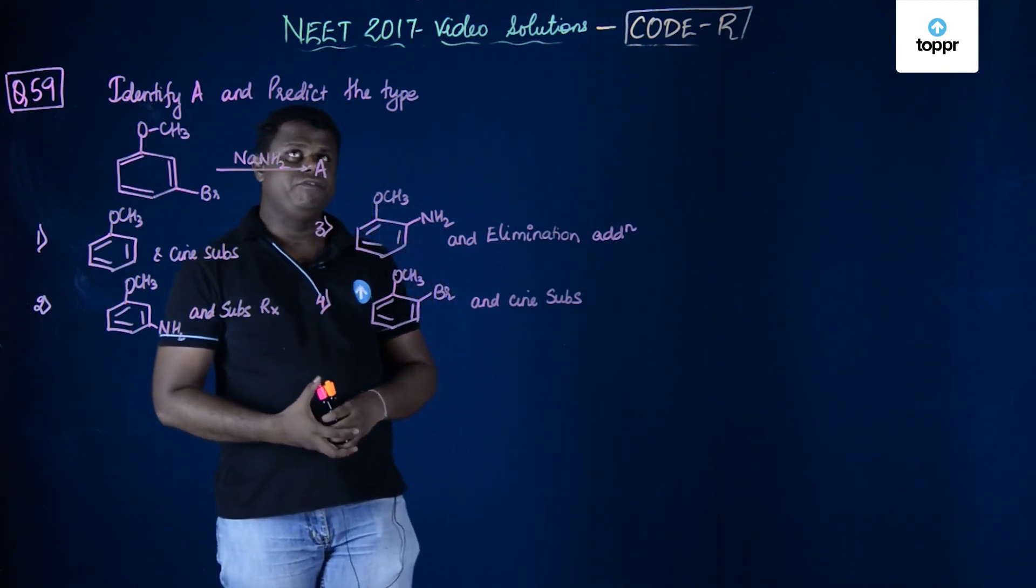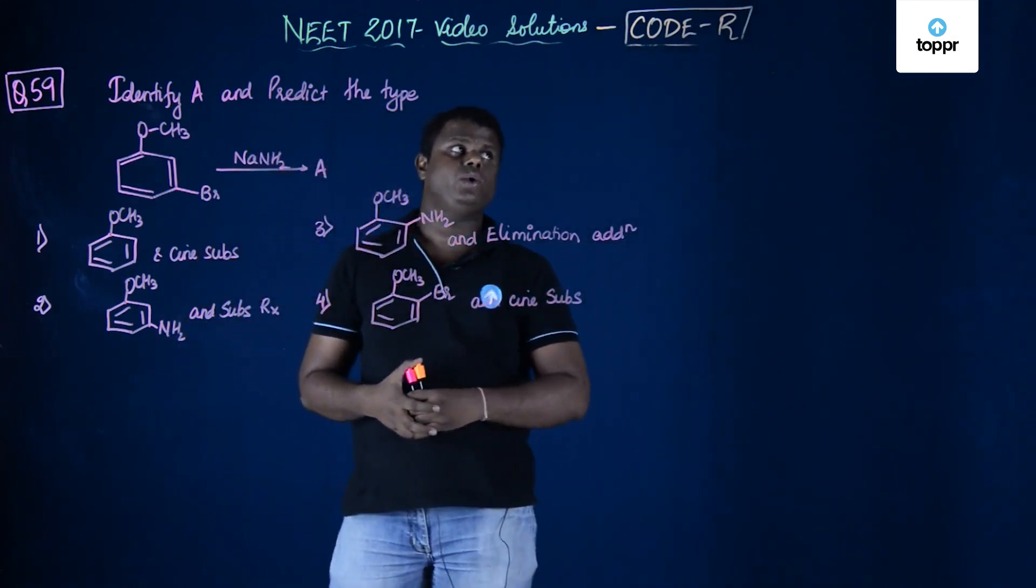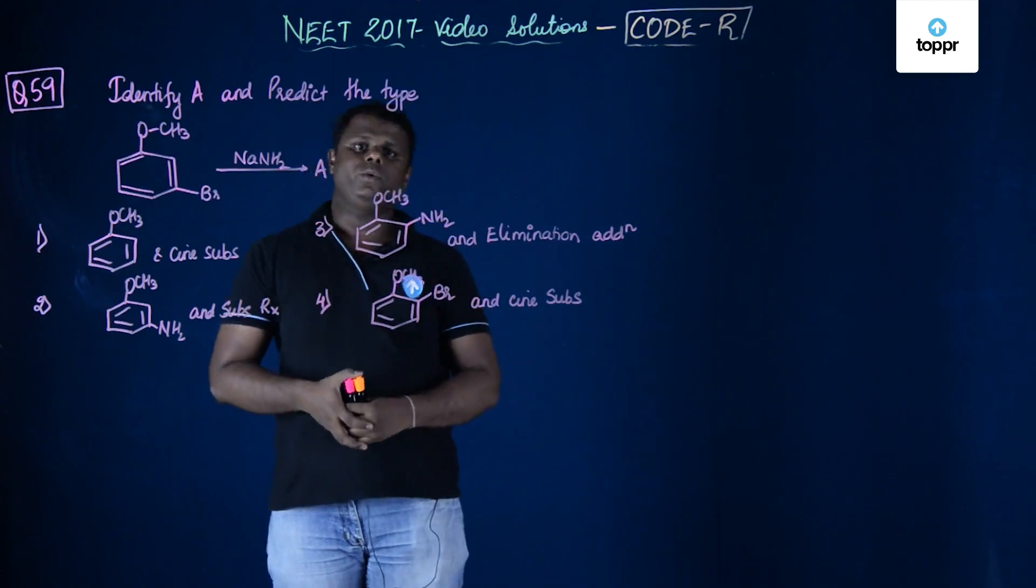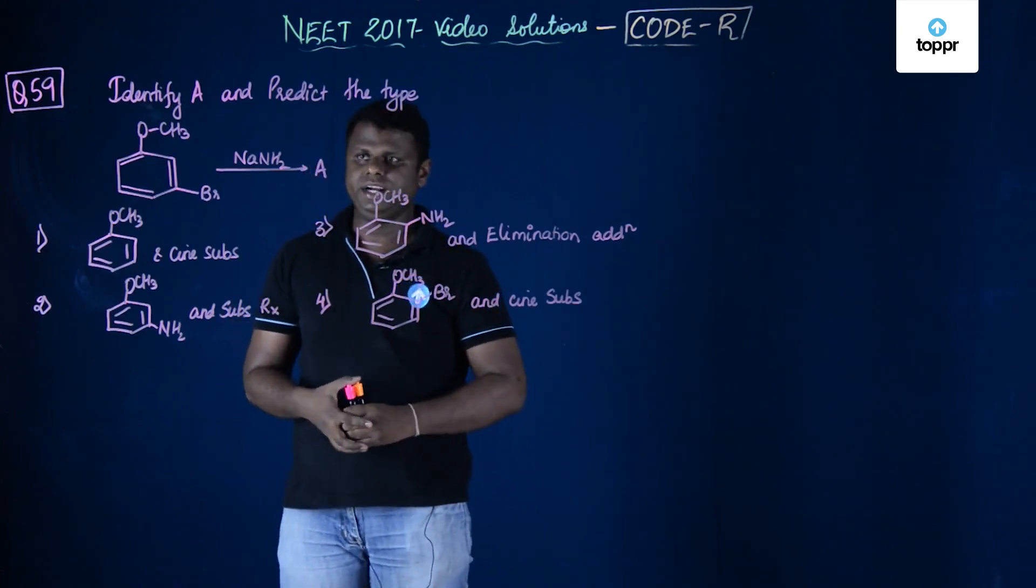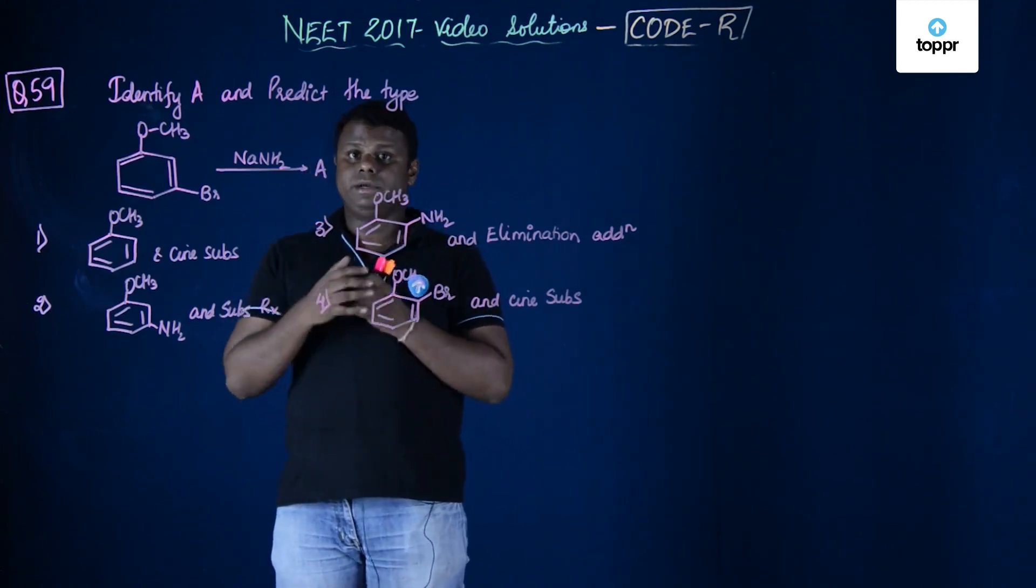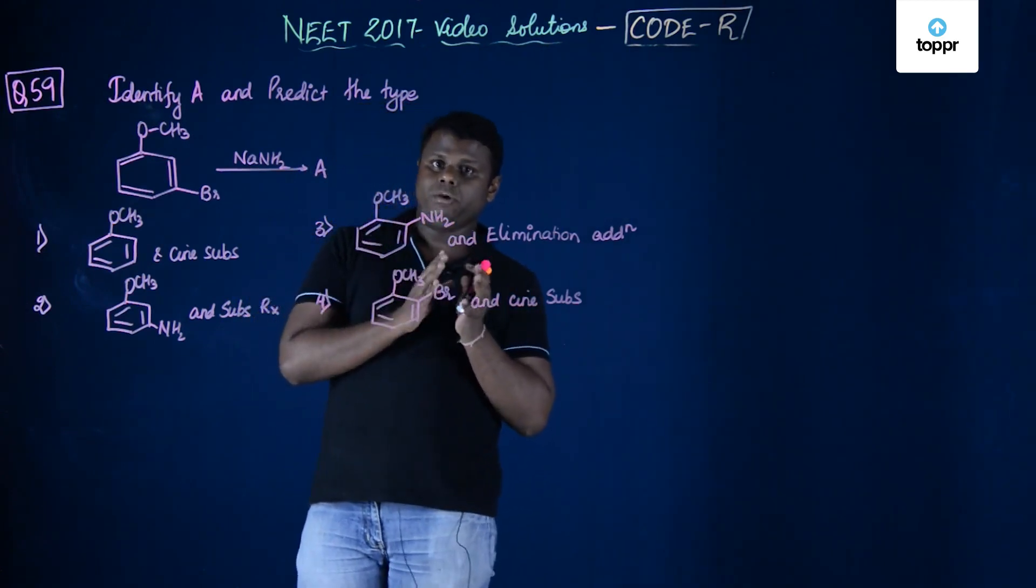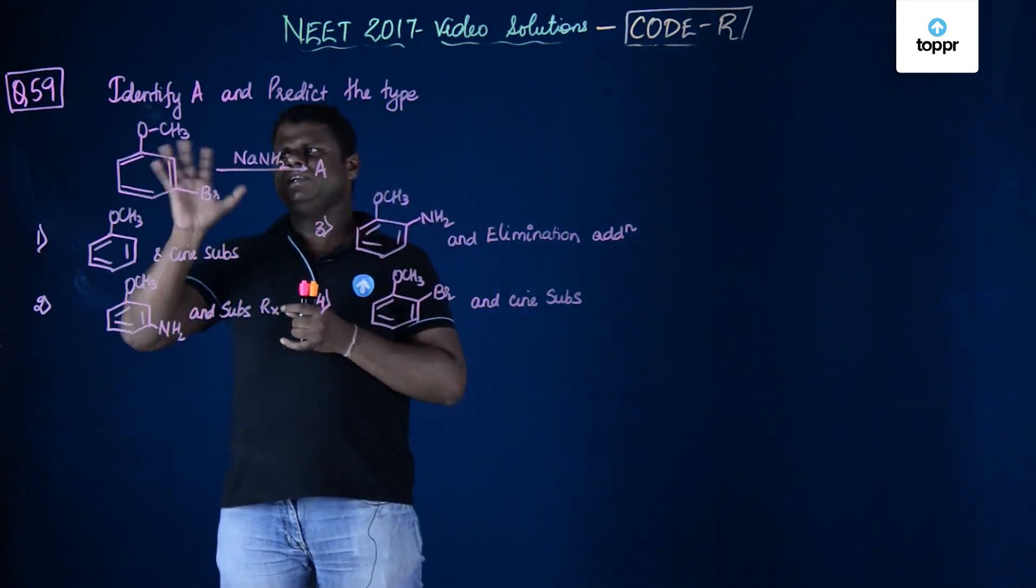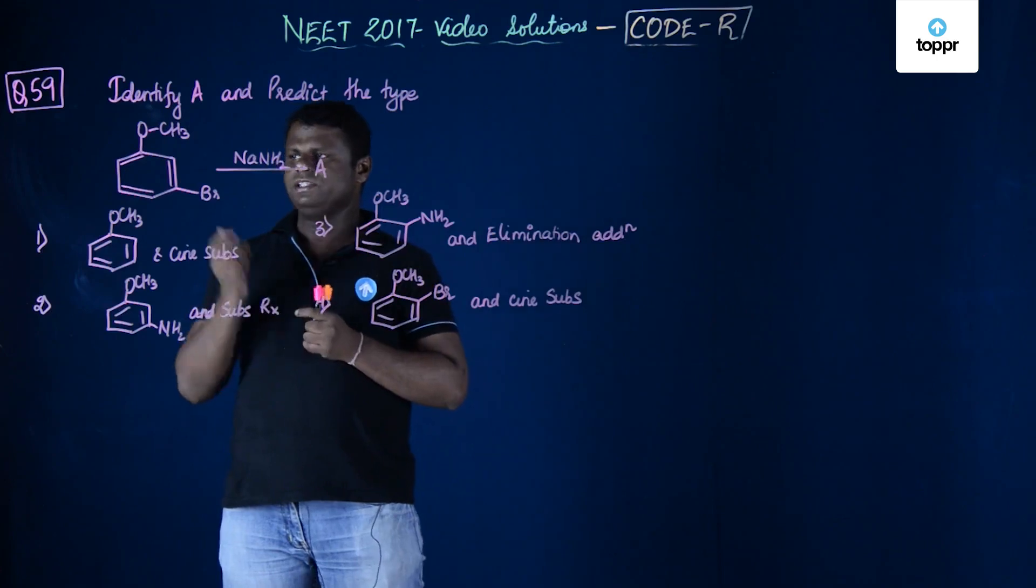Now, let's move on to question number 59 of NEET 2017 code R. This is a very good question, little bit application oriented, and it tests the basics of how many intermediates you know. This is related to different kinds of intermediates. Let's have a look.